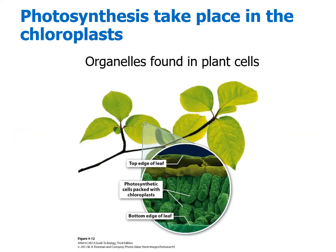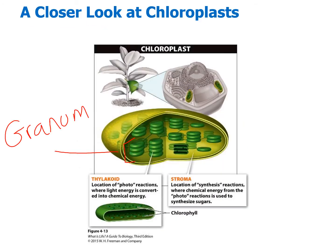Photosynthesis takes place within organelles known as chloroplasts, which are mostly located in the leaves of a plant. We're going to zoom in on those chloroplasts and take a good look at what's inside them. Let's take a closer look at the chloroplasts found inside the plant's leaves — this is how one chloroplast looks.